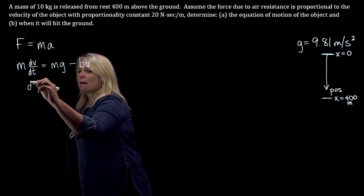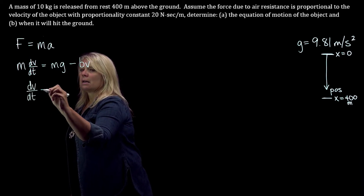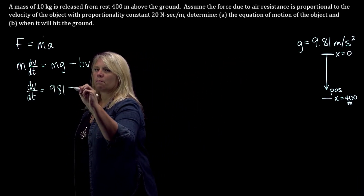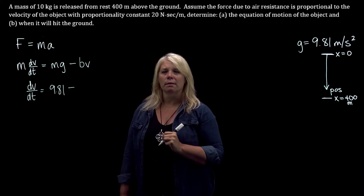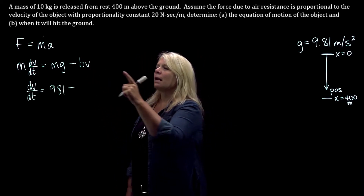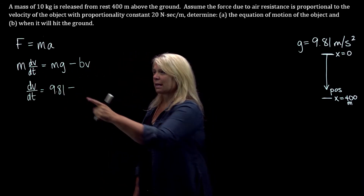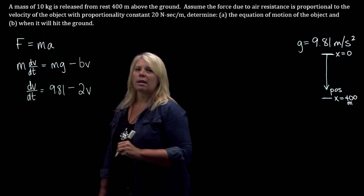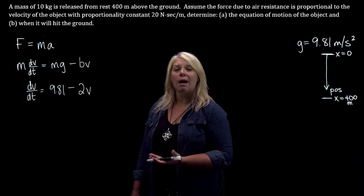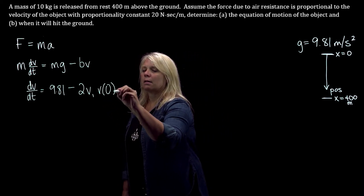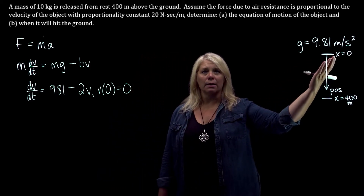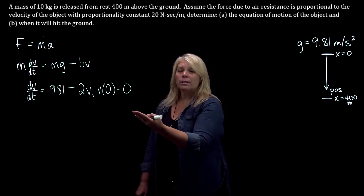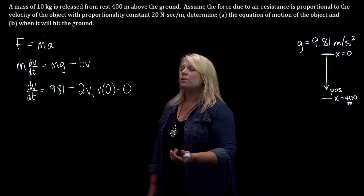When I divide through by m, I'll have dv/dt equals g, which is 9.81, minus b over m times v. Our constant b is 20, and the mass m is 10, so 20 over 10 gives us 2v. This object is released from rest, so the initial velocity is zero. Our initial position is also zero. We'll actually have two differential equations here. Remember that velocity is also a rate of change — velocity can be thought of as dx/dt where x is our position. Since we're only solving first-order differential equations so far, we'll solve this first-order equation and then write another one in terms of x.